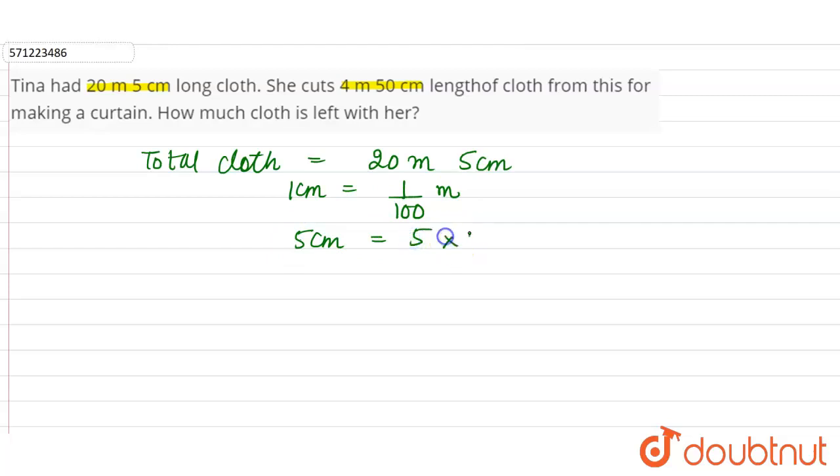Which is equal to 5 divided by 100 meter, which is also equal to 0.05 meter. So total cloth that Tina had is 20 meter plus 5 centimeters, so 0.05 meter. 20 meter plus 0.05 meter means 20.05 meter.